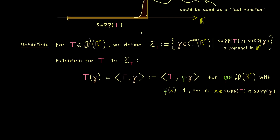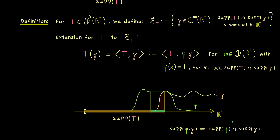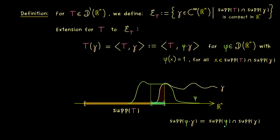Let's visualize this with a picture. On the x-axis we find the intersection of the two supports, which is a compact set. Exactly there, our test function phi should be equal to 1, and then since it's a test function, it goes smoothly to the 0 function outside. What we get when we multiply gamma with phi is a test function again. Moreover, the support of this new test function is simply the intersection of the support of phi with the support of gamma, which is compact, because the support of phi was already compact.